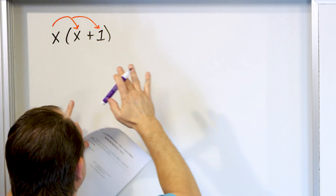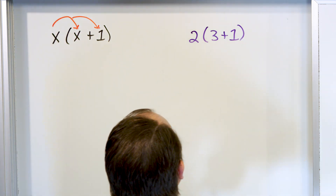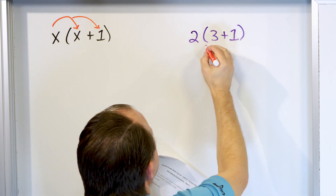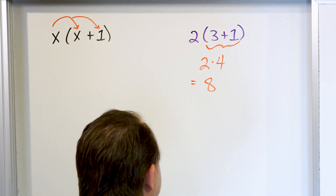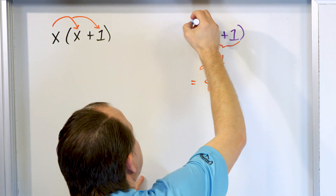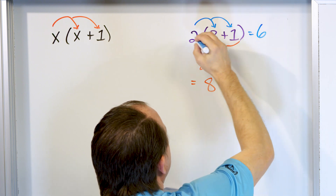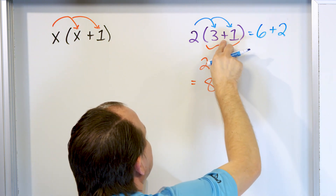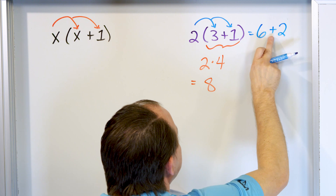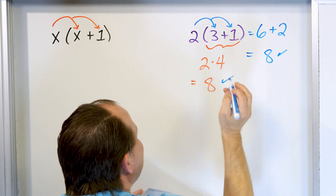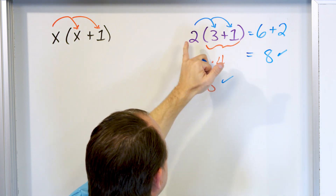Before we go on, let's review the distributive property. Let's say we have 2 times parentheses 3 plus 1. We can simplify by order of operations: 3 plus 1 is 4, then 2 times 4 is 8. But using the distributive property, we can also distribute: 2 times 3 is 6, and 2 times 1 is 2, linked with a plus sign. Six plus 2 is also 8. We get the same answer either way.